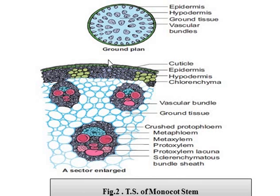In the monocot stem, we have a hypodermis. The nature of hypodermis in the case of monocot stem is sclerenchymatous, as opposed to collenchymatous in dicot. Sclerenchymatous cells are meant for mechanical strength, which is provided to the plant. The hypodermis is generally absent in some monocots like wheat and asparagus.